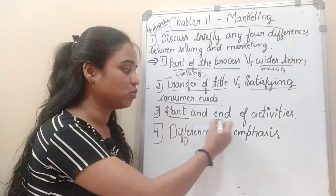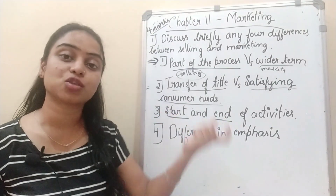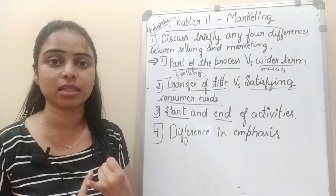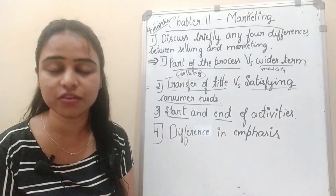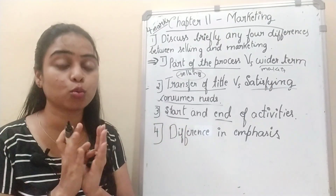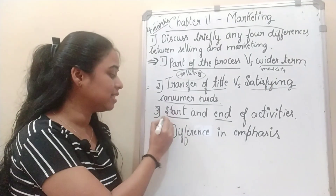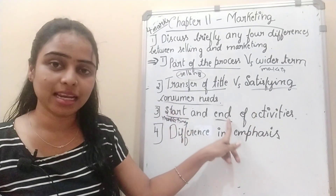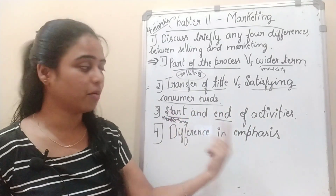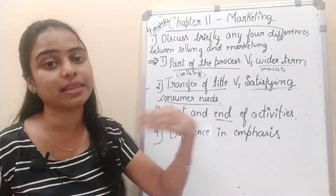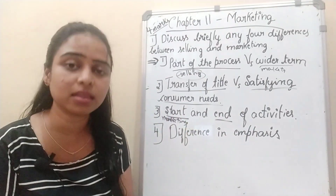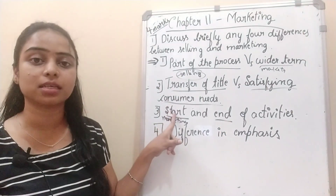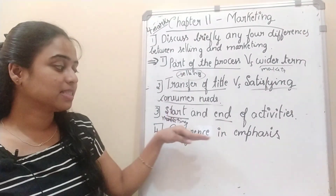The third difference is the start and end of activities. Marketing starts much before the product is developed — from product research all the way through to after-sale services, all these activities fall under marketing. So marketing is the start of the activities. Selling comes at the end — after the product is developed, then the sale happens. So selling is the end of the activity.